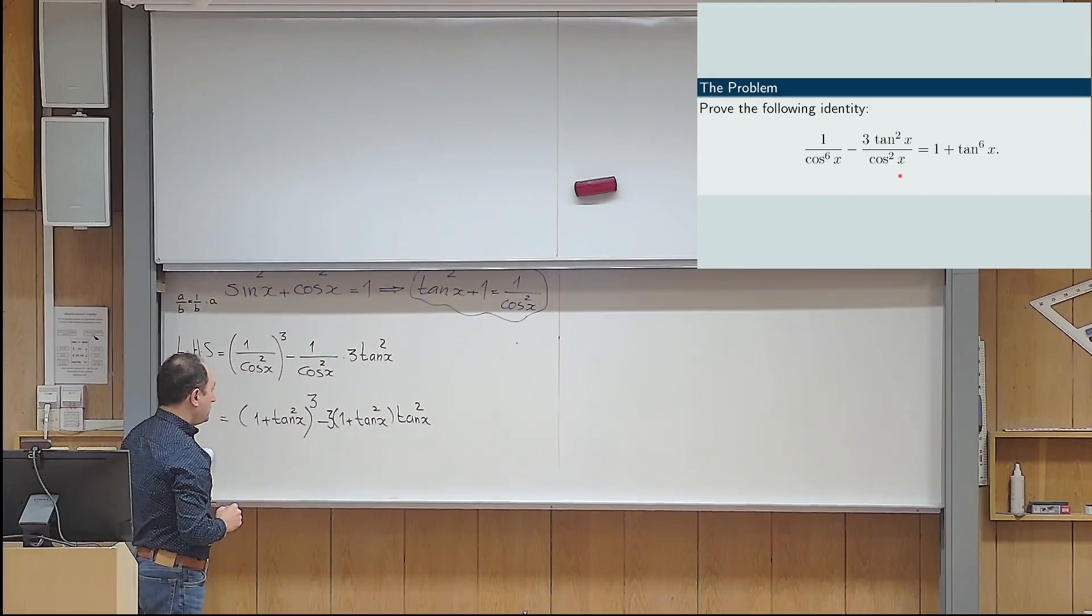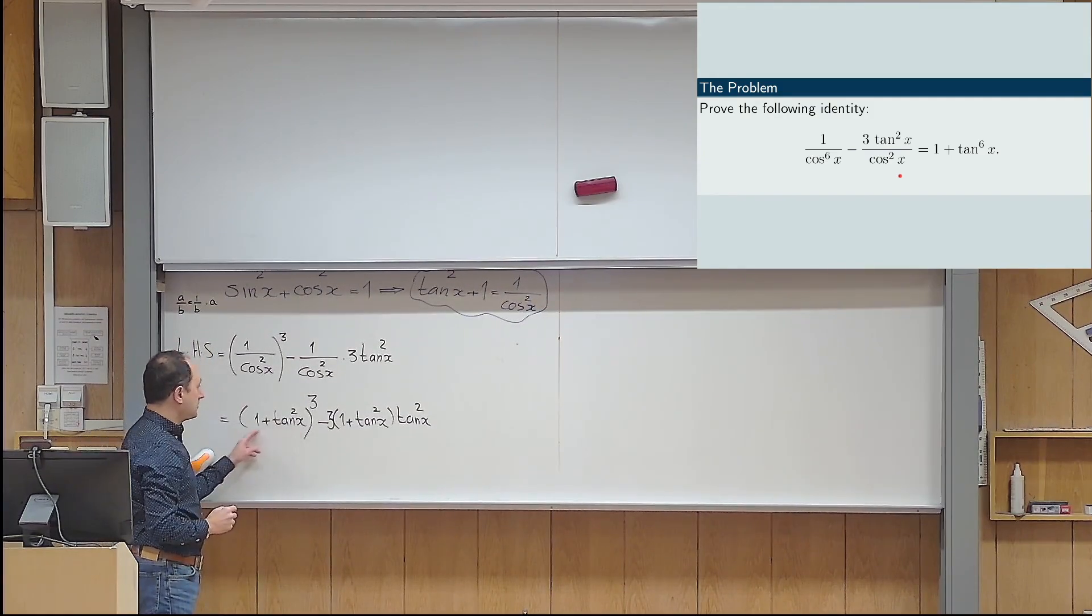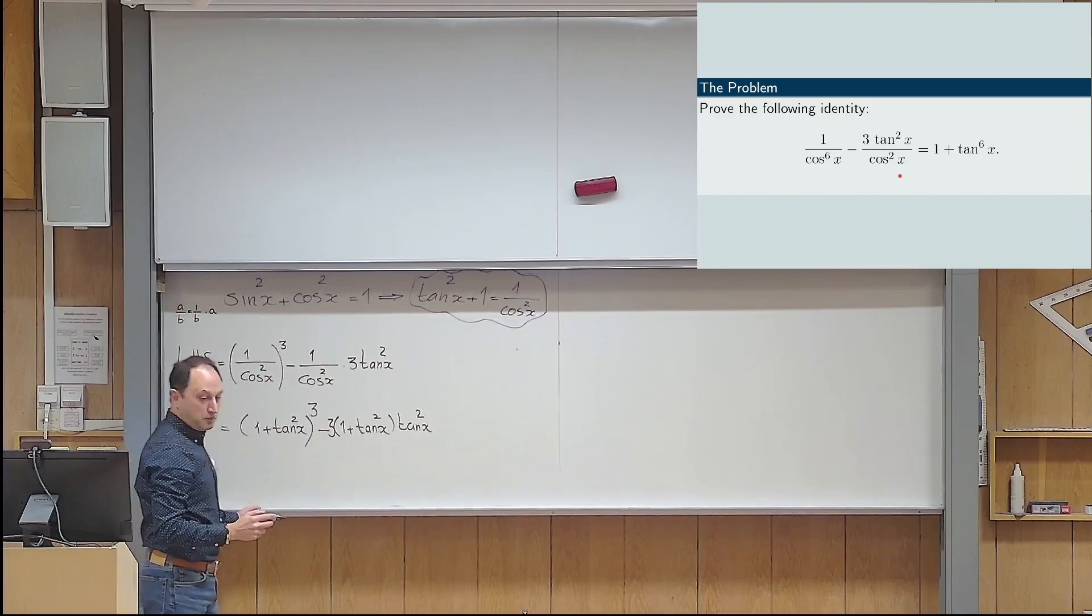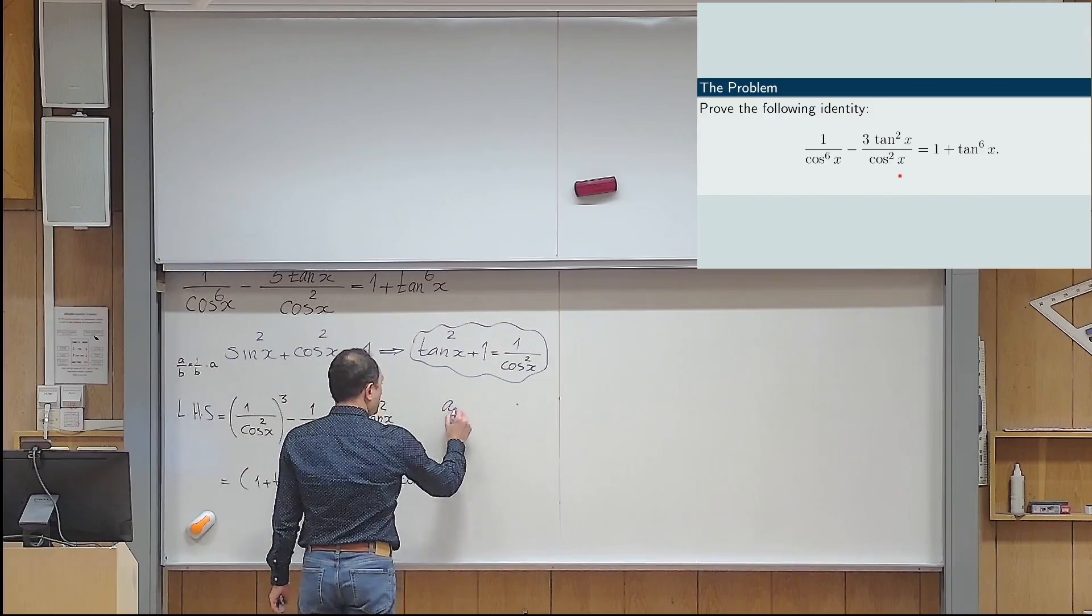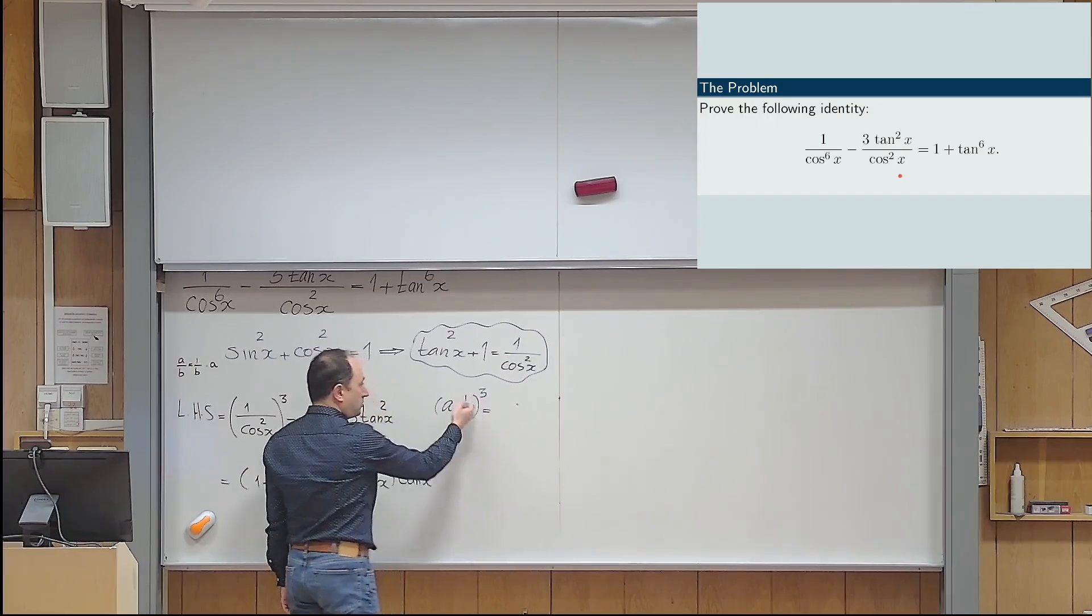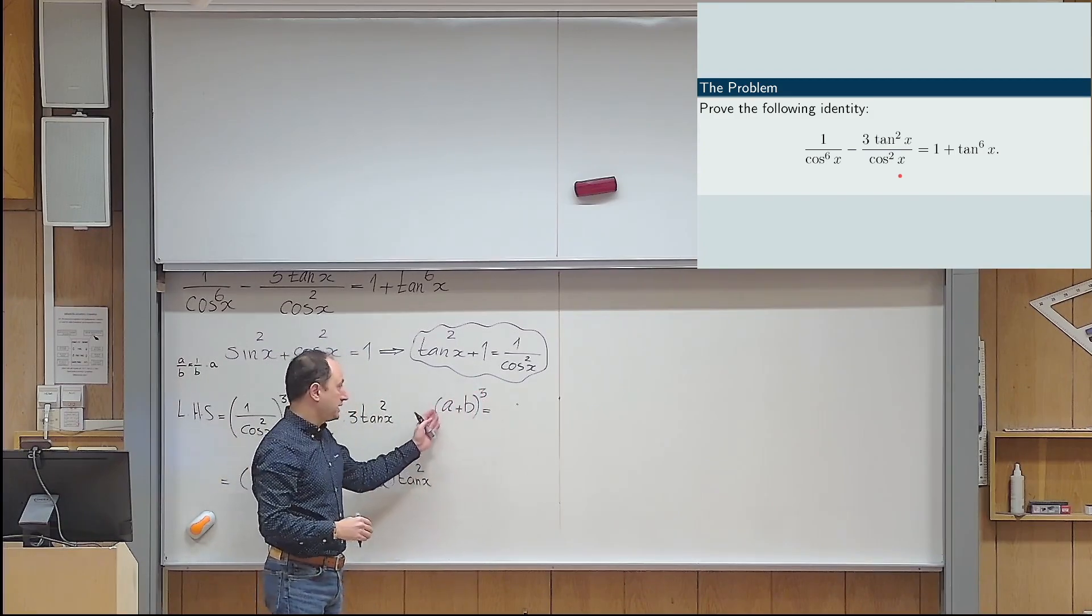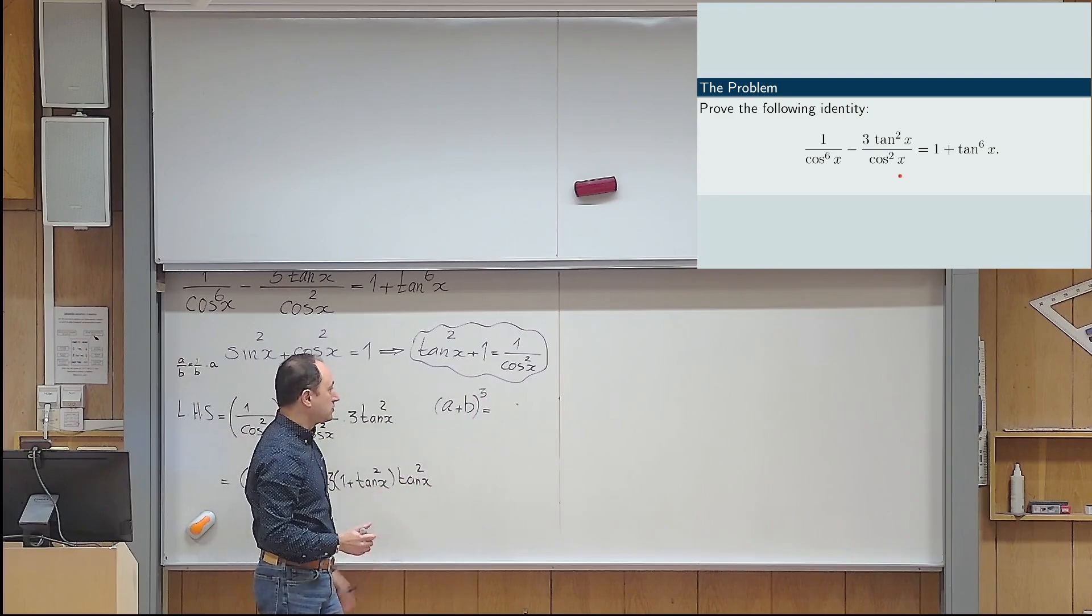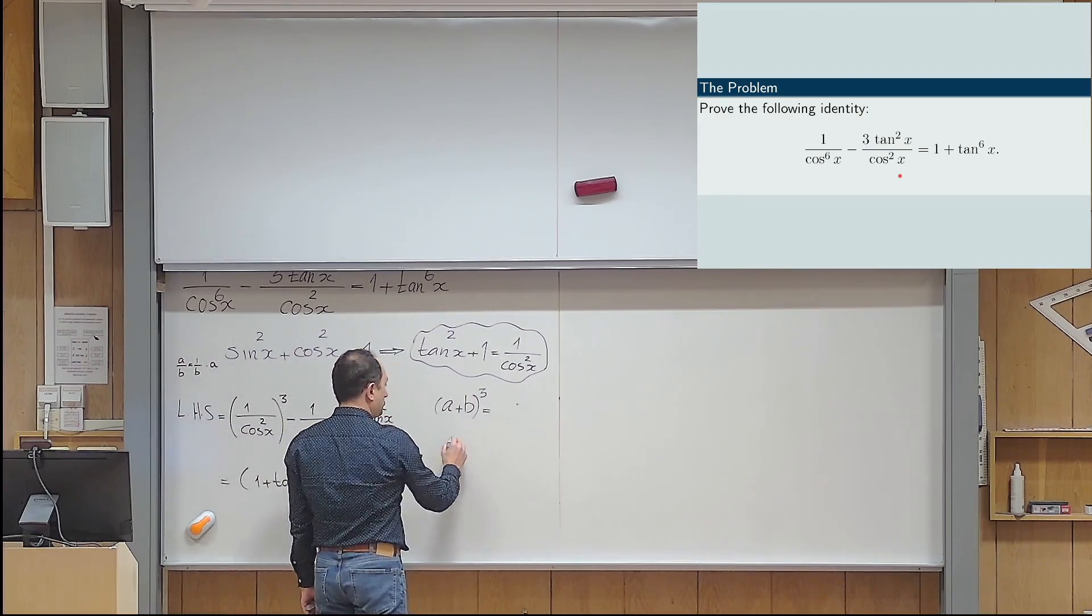So, what I want to do now, I can expand this expression. That's also a famous algebraic identity. So, if you have a plus b to the third, you already probably have the second one in your memory, a plus b to the power of 2, but a plus b to the power of 3 is also there always in the formula sheets.